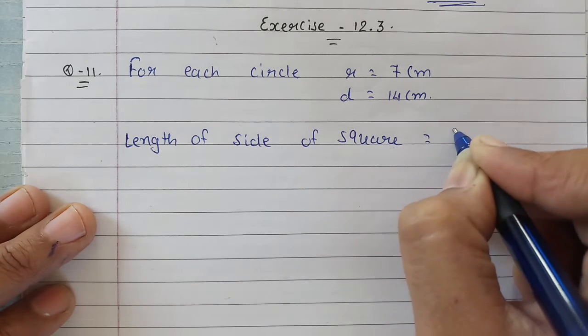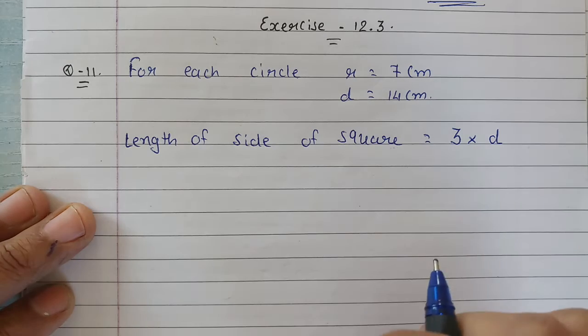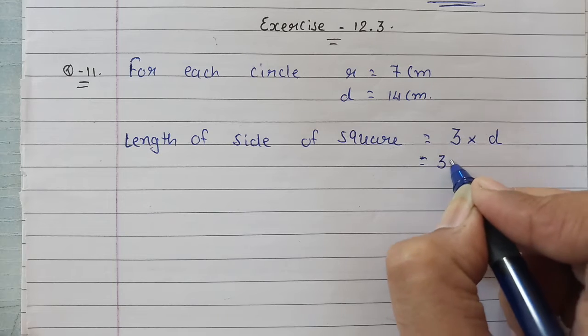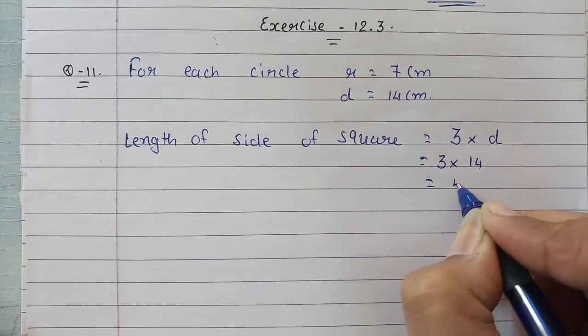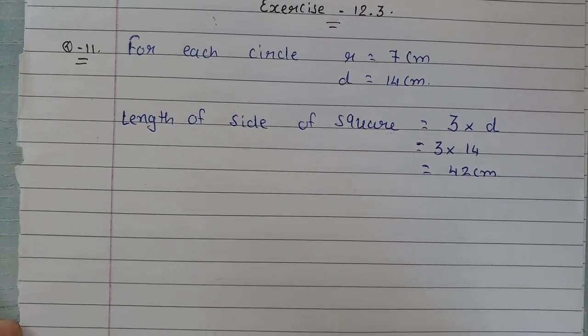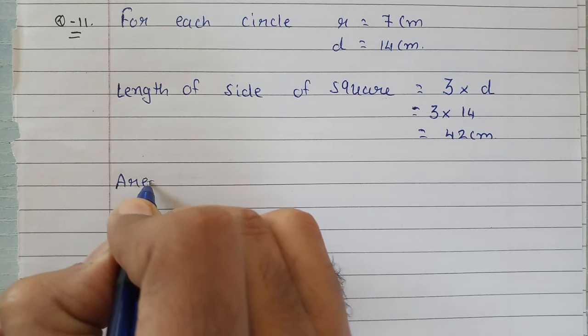As I explained in the figure, there are three circles, so we add three diameters to get the length, or 3 times the diameter. So that will be 3 into 14, and that will be equal to 42 centimeter. So the square's length is 42 centimeters.